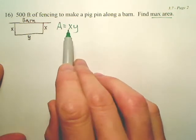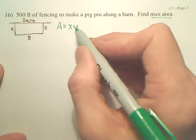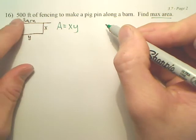We need a secondary because we need these x's and y's to disappear. We need to have all x's or all y's. The secondary equation is perimeter.